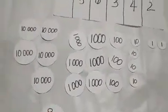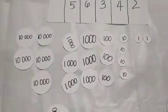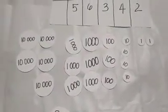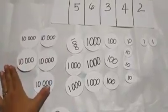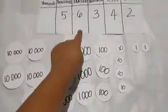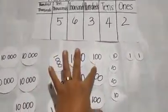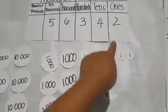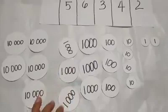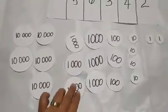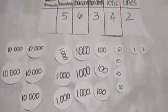This is now how we visualize our 56,342. We have 5 ka 10,000, 6 ka 1,000, 3 ka 100, 4 ka 10s, and 2 ka 1s. That's it.